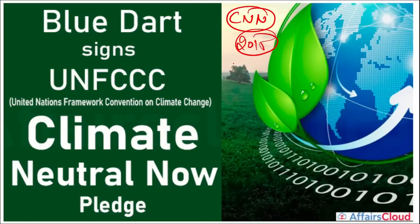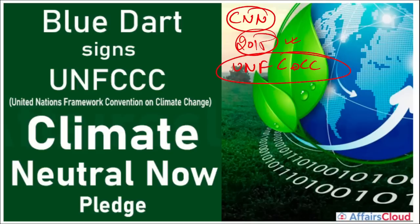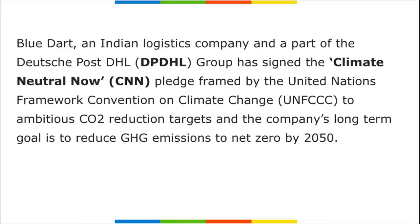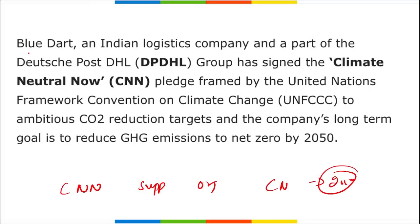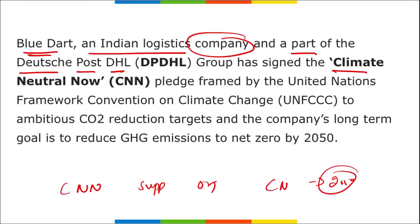The CNN pledge — Climate Neutral Now — is one of several initiatives launched by the United Nations Framework Convention on Climate Change (UNFCCC). It was launched in 2015 to increase climate action by engaging non-party stakeholders such as companies, governments, organizations, and individuals. It aims to contribute to limiting the rise in temperature and achieving a climate-neutral world by 2050 as per the Paris Agreement.